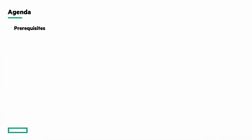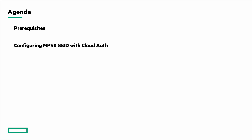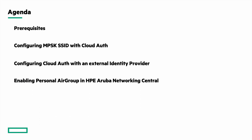In this video we will be looking into the prerequisites for enabling personal device visibility and sharing feature. We will be configuring an MPSK SSID with CloudAuth, then configure CloudAuth with an external identity provider, and then enable personal device visibility and sharing in HPE Aruba Networking Central. Finally, we will see a demo covering the cloud guest portal to generate MPSK for personal devices, how to share personal devices, and how to manually change a personal device to a public device.